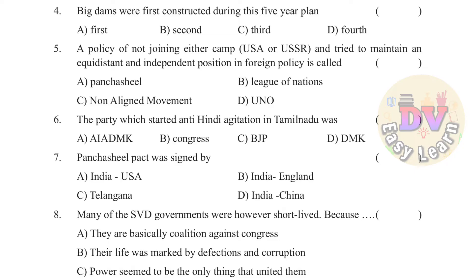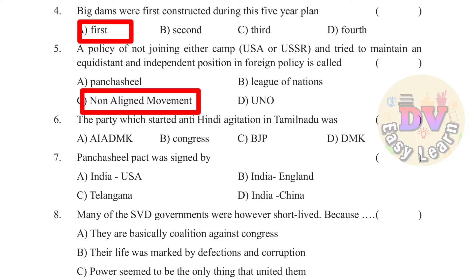Question 4: Big dams were first constructed during this five-year plan. Question 5: A policy of not joining either camp — USA or USSR — and trying to maintain an equidistant and independent position in foreign policy is called — Answer: Non-Aligned Movement. Question 6: The party which started anti-Hindi agitation in Tamil Nadu — Answer: DMK. Question 7: Panchsheel Pact was signed by — Answer: India and China.